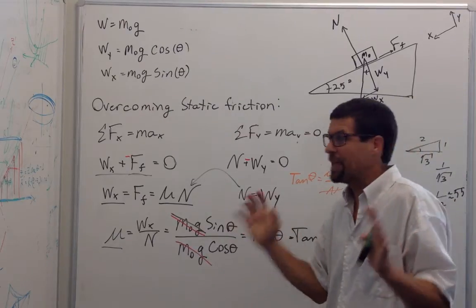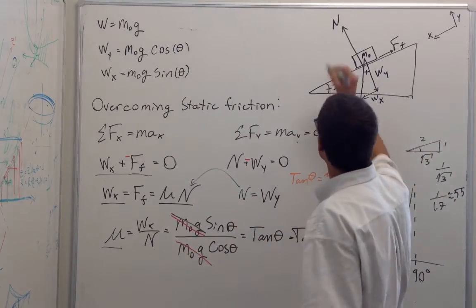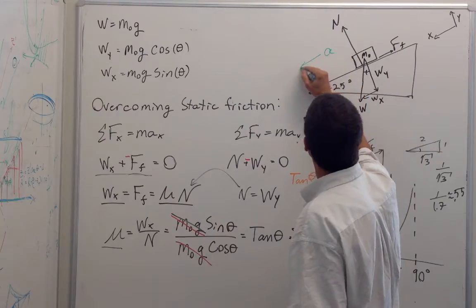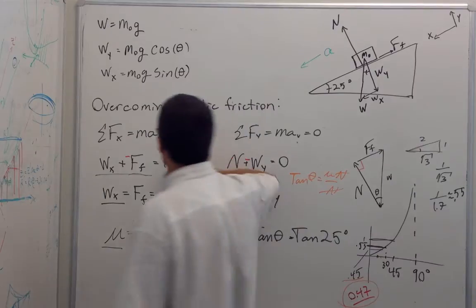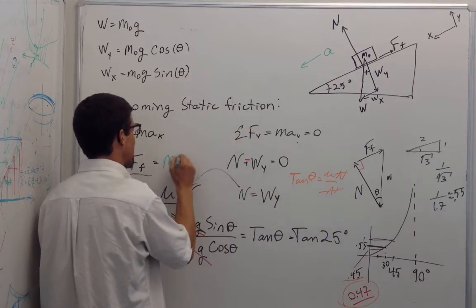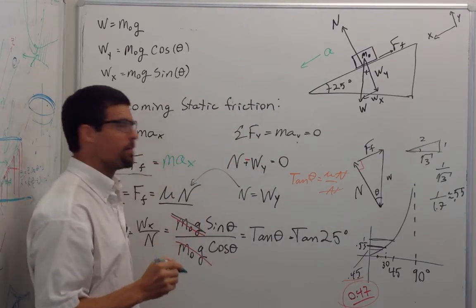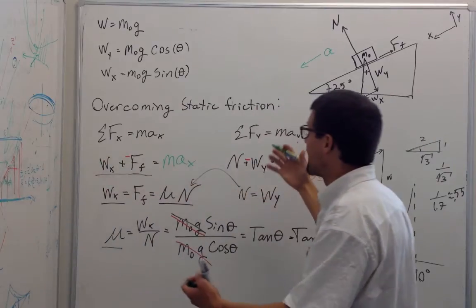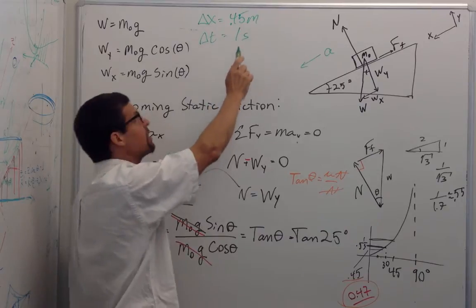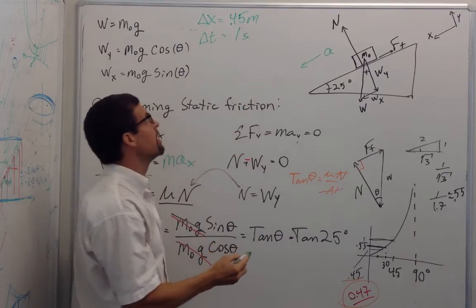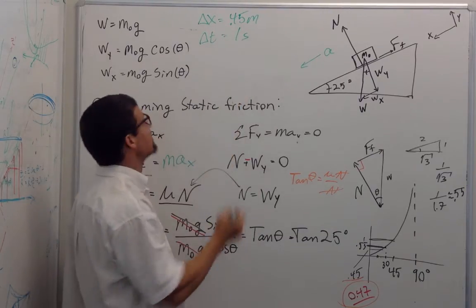Now, how does this change when we actually get acceleration? When we break that static friction, the acceleration is in the positive x-direction. And now this is no longer 0. This is mass times acceleration in the x-direction. Now, before we finish this off, let's find out what the acceleration is. What we remember, we remember that delta x for one of the classes was about 45 centimeters, and delta t was one second.